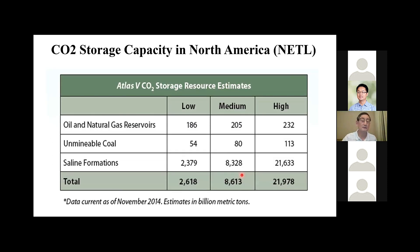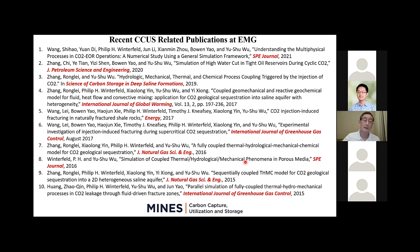咱们主要考虑盐水层，盐水层储存能力最大，因为体积大、分布广，世界各地都有，而且盐水层没有其他经济用途。这是我们这个组近几年发表的一些文章，主要是二氧化碳方面，近期主要是二氧化碳吞吐法提高采收率，早期有些模拟，主要分两个方面：一个是盐力学耦合二氧化碳埋存的模型发展，另外一个是加入化学反应的THMC模型。